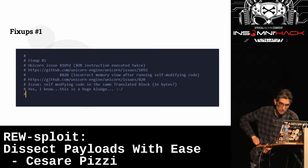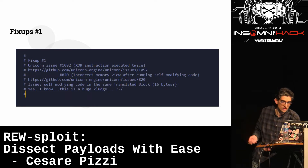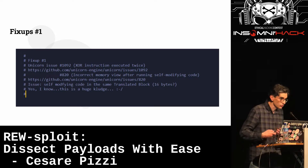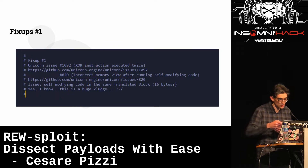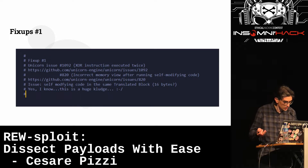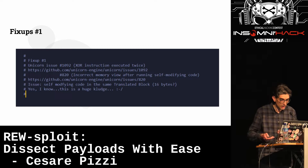Shikata Ga Nai is a well-known encoding engine, and Unicorn fails when trying to emulate it because some instructions are executed twice and execution is unreliable. There's an open issue that will probably never be fixed because it comes from the QEMU engine — Shikata Ga Nai tries to self-modify code within the same translated block within the first 16 bytes from the program counter. What I did was implement fix-ups manually in RE-sploit's code to execute that portion myself and overcome the problem.